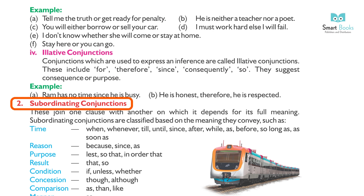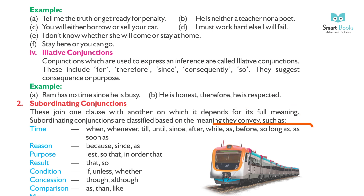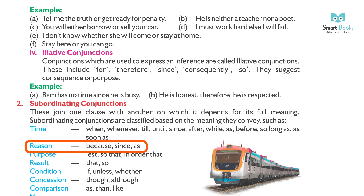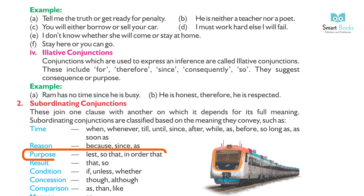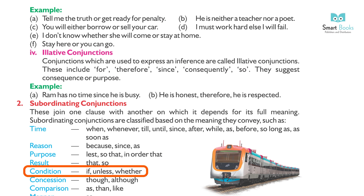2. Subordinating conjunctions — these join one clause with another on which it depends for its full meaning. Subordinating conjunctions are classified based on the meaning they convey, such as: time (when, whenever, till, until, since, after, while, as, before, so long as, as soon as), reason (because, since, as), purpose (lest, so that, in order that), result (that, so), condition (if, unless, whether).